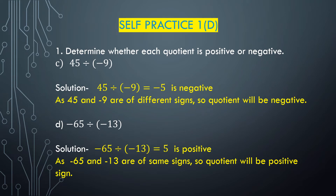Part C: 45 divided by minus 9. Here 45 is a positive integer and minus 9 is a negative integer. When we divide integers of opposite signs, the quotient will be negative. We know 9 multiplied with 5 is 45, so 45 divided by 9 is 5. Since minus 9 is negative, the quotient is minus 5, which is a negative integer.